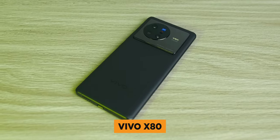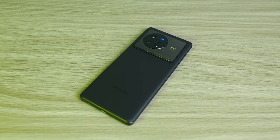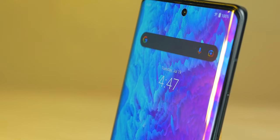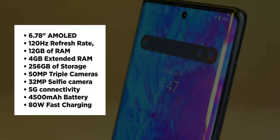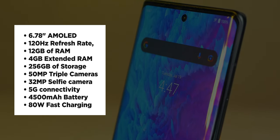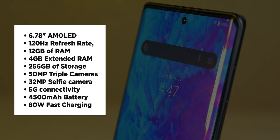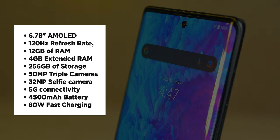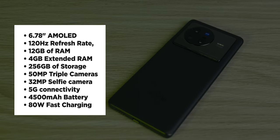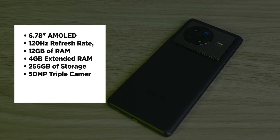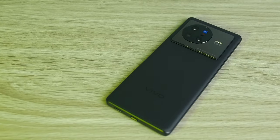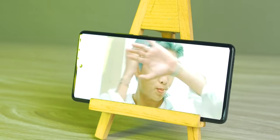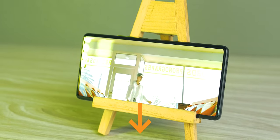Now that you're acquainted with the Vivo X80, it's time to consider buying. You can get it for 45,999 pesos. At that price point, it already has a large 6.78-inch AMOLED display with 120Hz refresh rate, 12GB of RAM with 4GB extended RAM feature, 256GB of storage, 50MP triple rear cameras, 32MP selfie camera, 5G connectivity, 4500mAh battery with 80W fast charging, and of course the flagship MediaTek Dimensity 9000. It is available at Vivo's official online store, as well as Shopee and Lazada, and we'll include the links in the description box below.